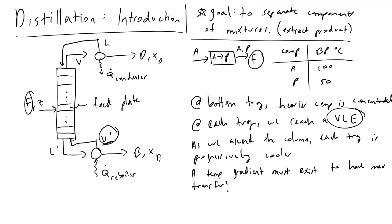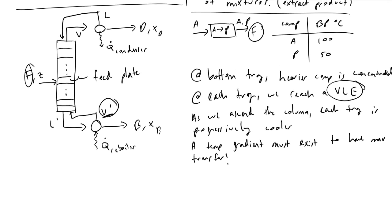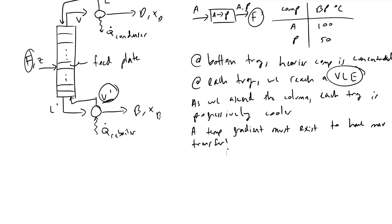You need to go back to the drawing board, change the number of trays, and lower your reboiler duty until you see a nice temperature gradient. For a back-of-the-envelope calculation in this binary system with unreacted reactant A and product P: we take the boiling point of A (100°C) minus the boiling point of P (50°C), divide by the number of trays. If we had 10 trays, we would expect a 5°C temperature gradient per tray.